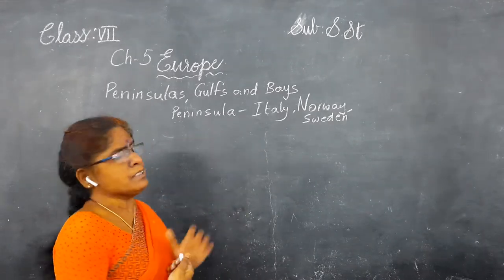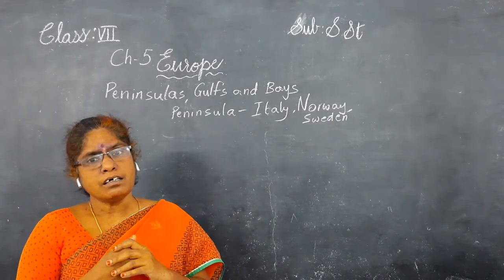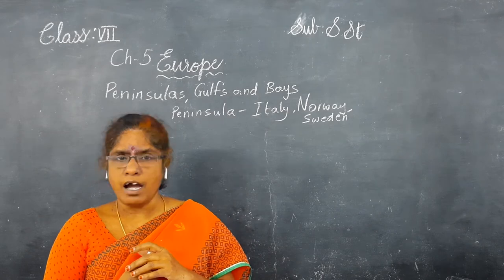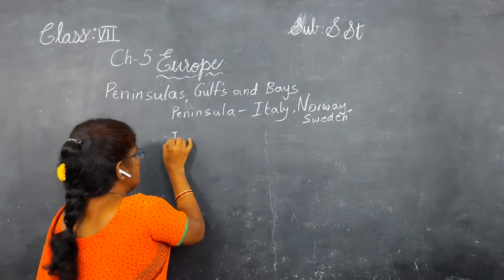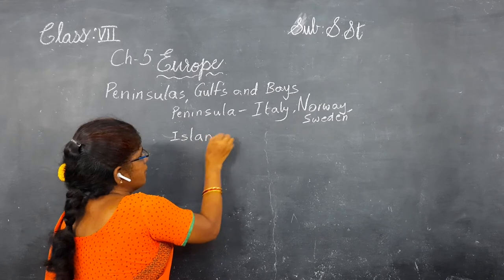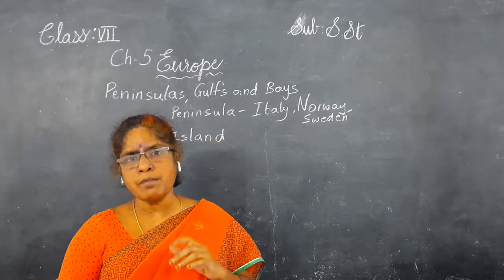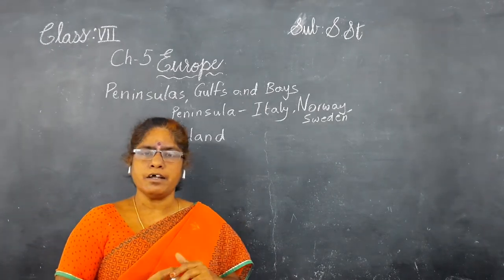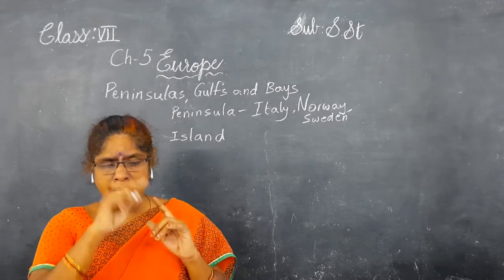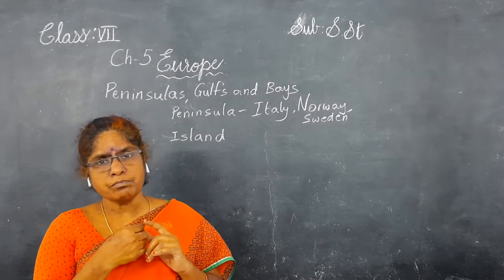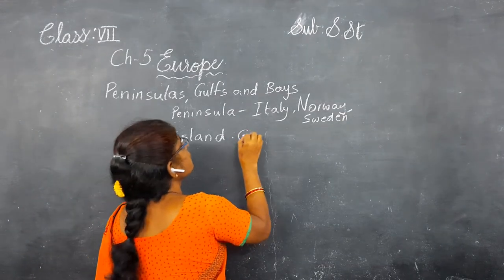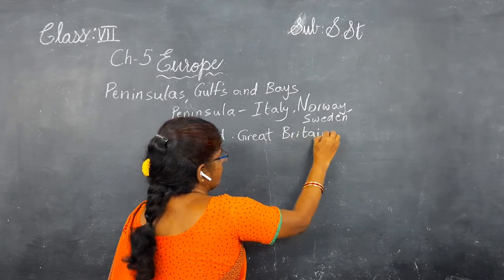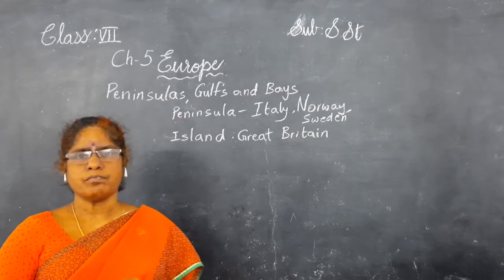Now about the island: a land which is covered by water on all the sides, then we call it as an island. An island is a land part which is covered by water on all the sides. The best example in this continent is Great Britain. Great Britain is surrounded by water on all sides.